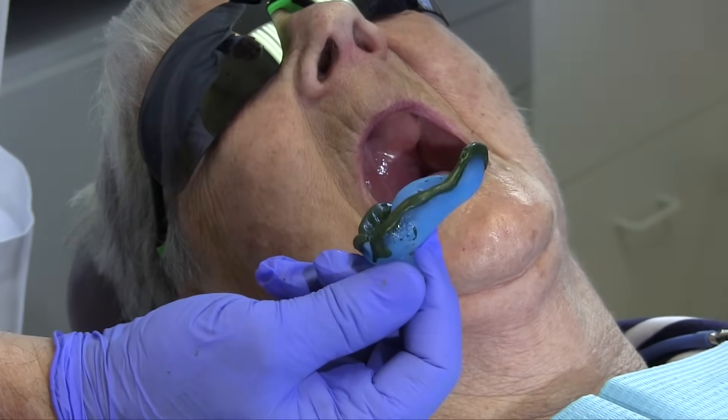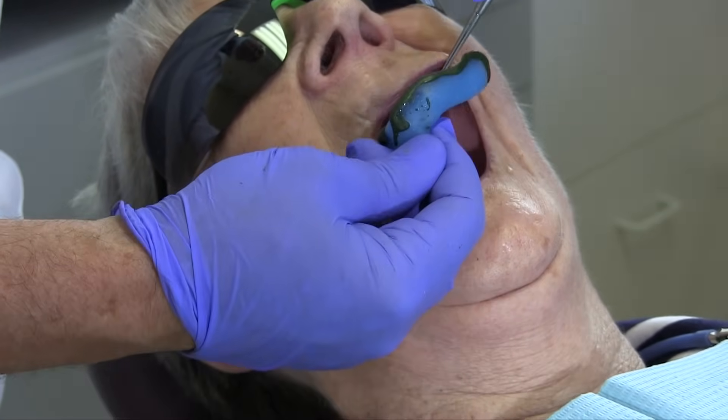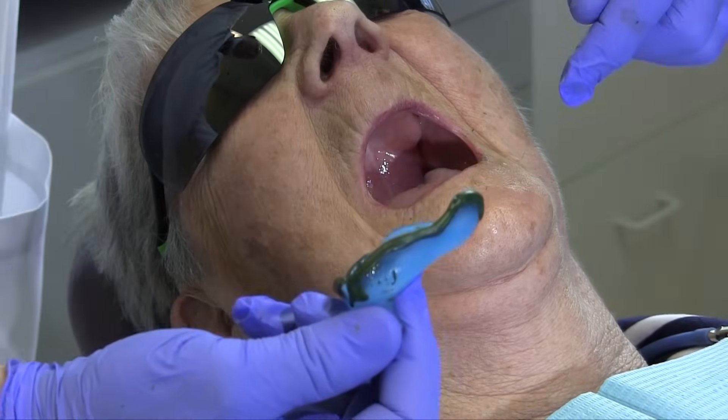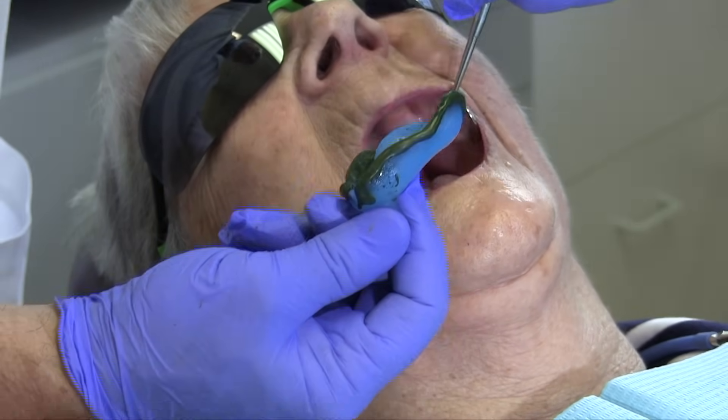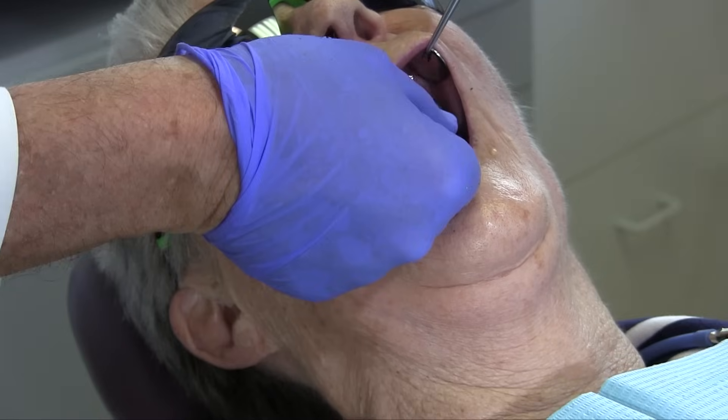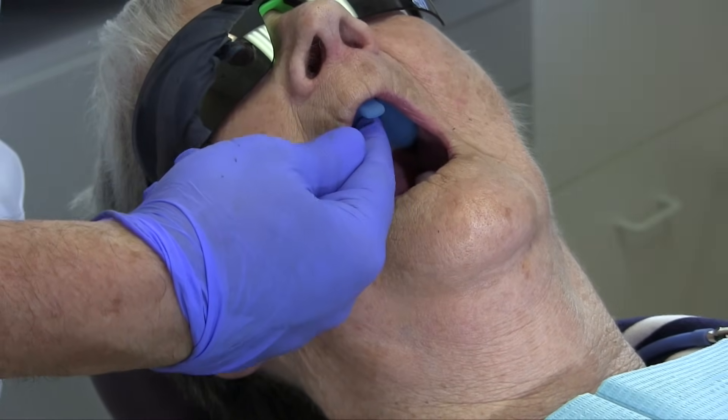Border molding is easily accomplished with the operator seated and the patient reclined. Have the patient keep their lips relaxed and use a mouth mirror to slightly retract one side of the mouth for easier placement of the tray with the softened compound.